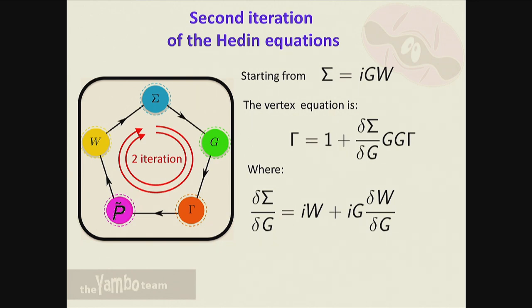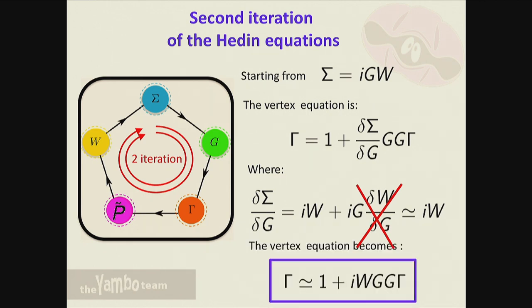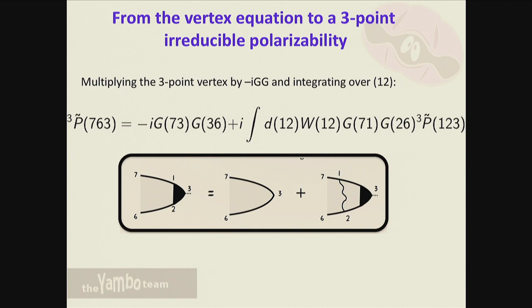If you start with sigma equal to GW you end up with this term EW. This is the first approximation done in the Bethe-Salpeter equation, as Fulvio and Davide mentioned: you assume this other term is negligible and delete it completely, so the functional derivative of sigma is simply EW. At the end we arrive at an equation for the vertex, which is a three-point equation in space and time.